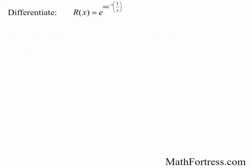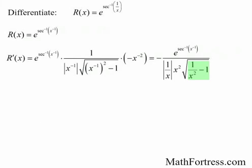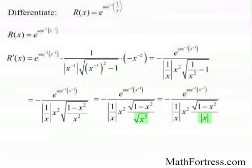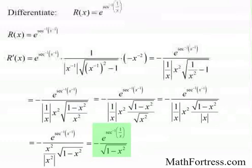Differentiate the expression r(x) equals e raised to the secant inverse of 1 over x. We can rewrite 1 over x as x to the power of negative 1. Since we have nested functions, we apply the chain rule twice. Simplifying, we get a common denominator and take the square root of both the numerator and denominator. The square root of x squared is the absolute value of x, which combines with the other absolute value term, and x squared over the absolute value of x squared cancels out. The final derivative is equal to negative e raised to the power of secant inverse of 1 over x, over the square root of 1 minus x squared.